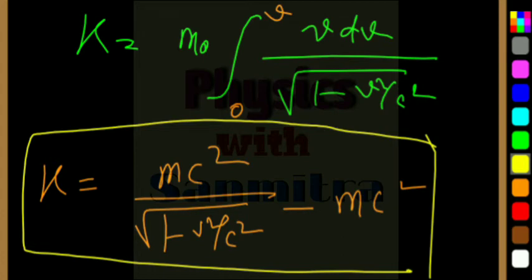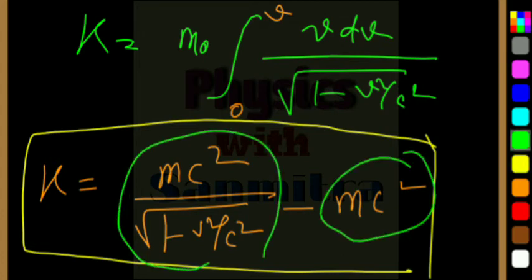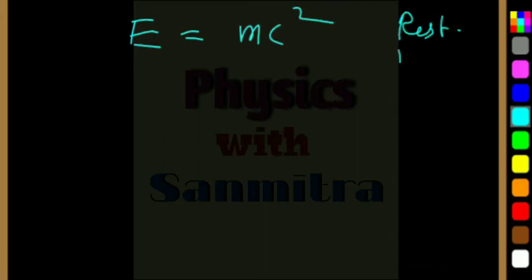Now, let's look at each term, this first term and this is the second term. This m0 c squared, what does it signify? I think many of you have guessed it right, that is E is equal to mc squared. This is known as the rest mass energy.